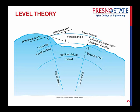Leveling is the process of finding elevations of points. Vertical control represents having multiple benchmarks — multiple known points with known elevations, known distances above a vertical datum.